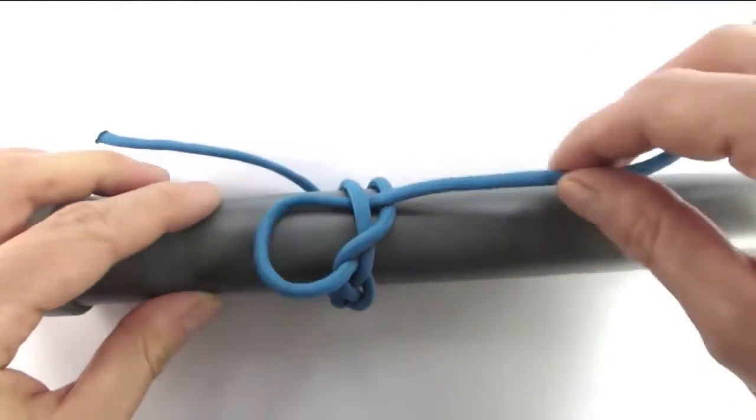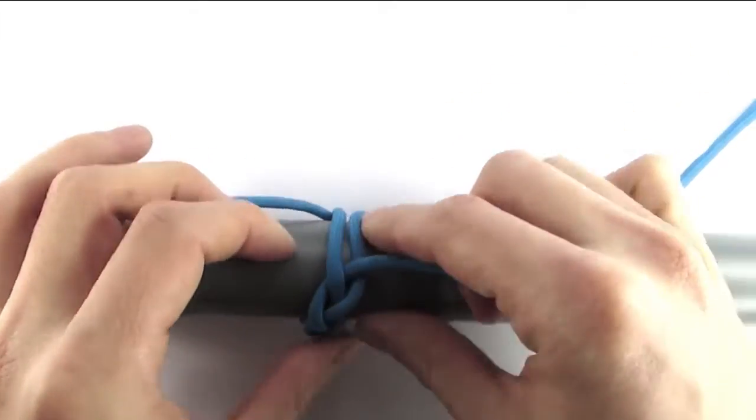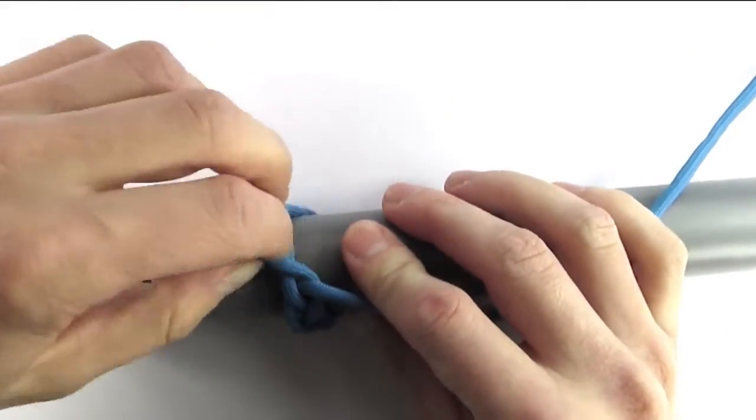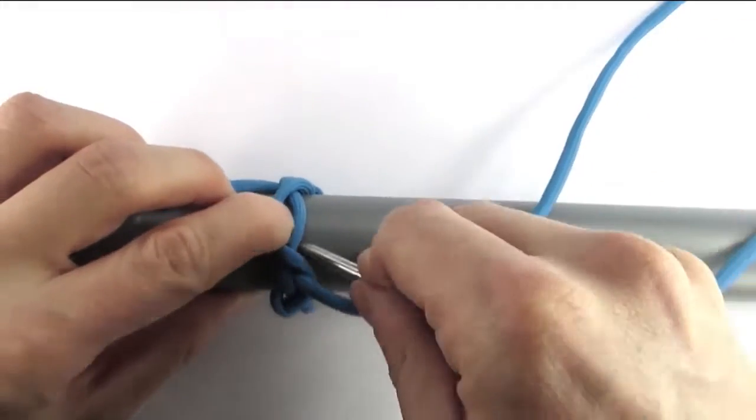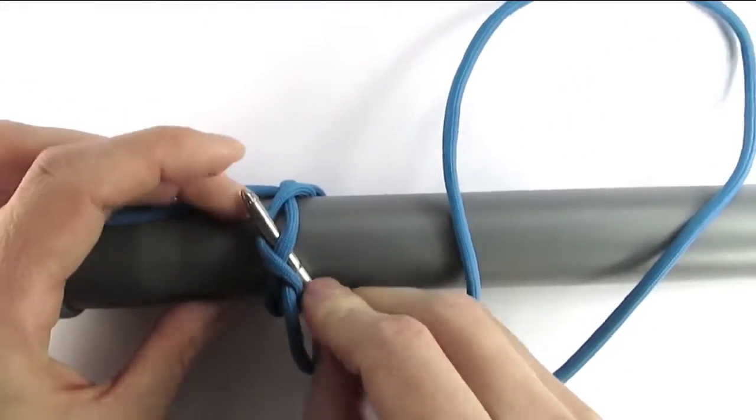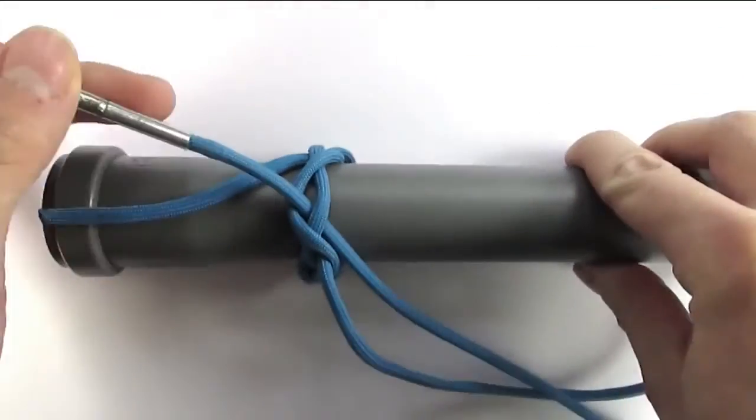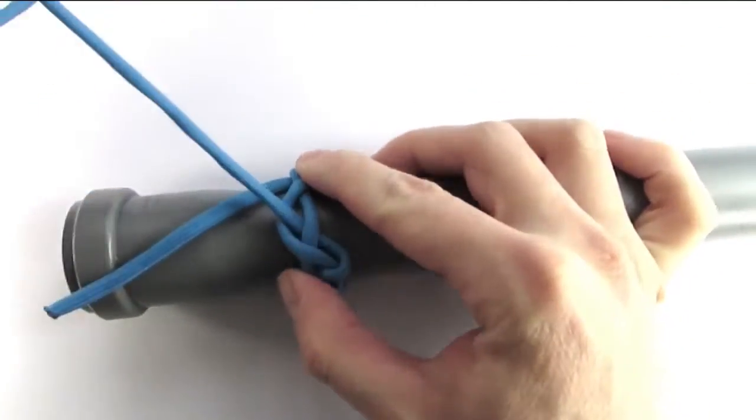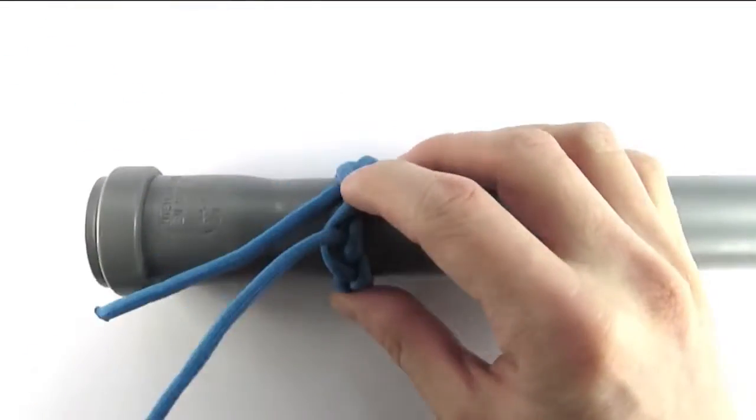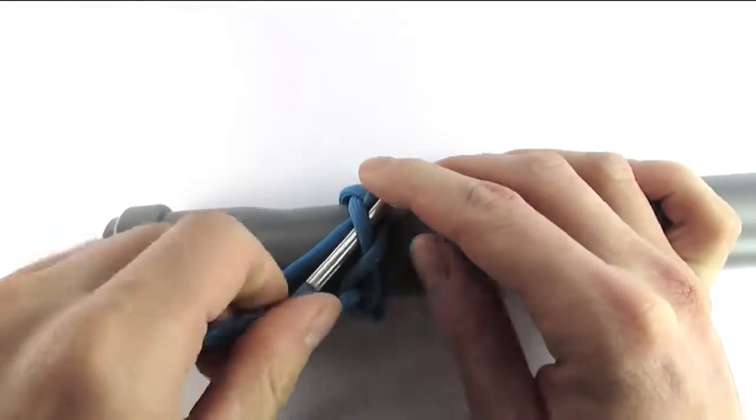This is why it is called a long three-part turk's head, because we can continue it for as long as we want. We're going to finish this knot by placing it next to the standing end where we began.